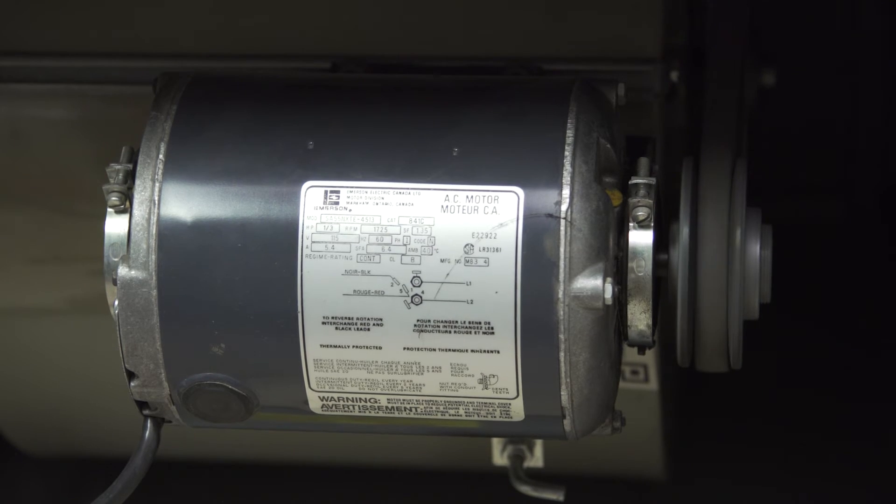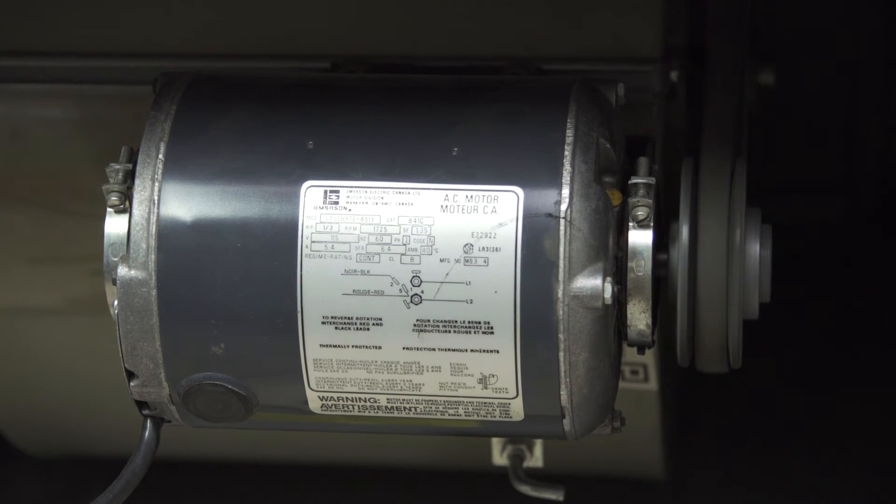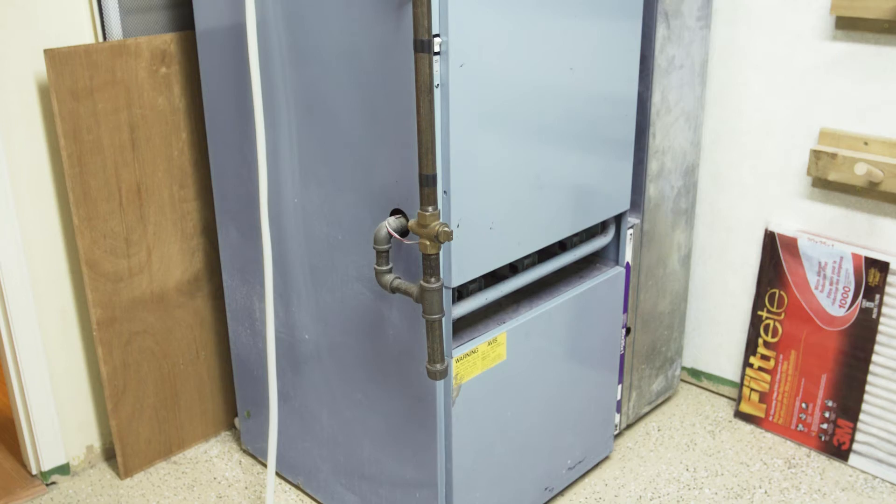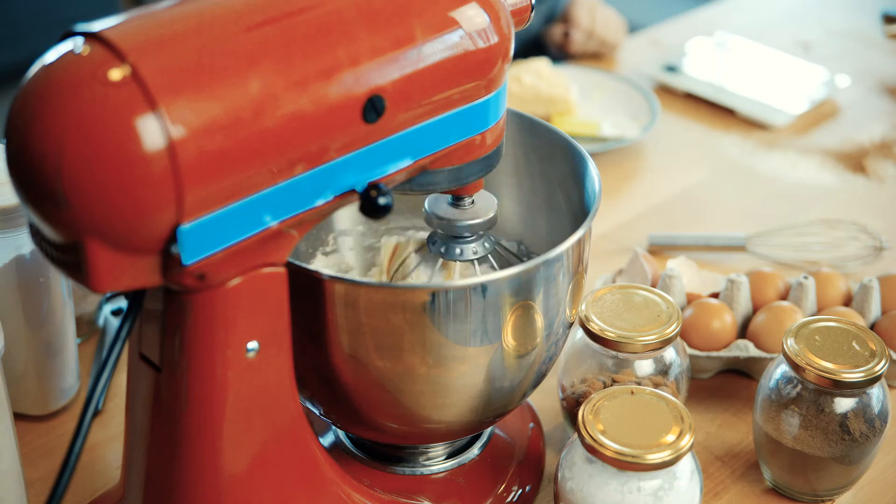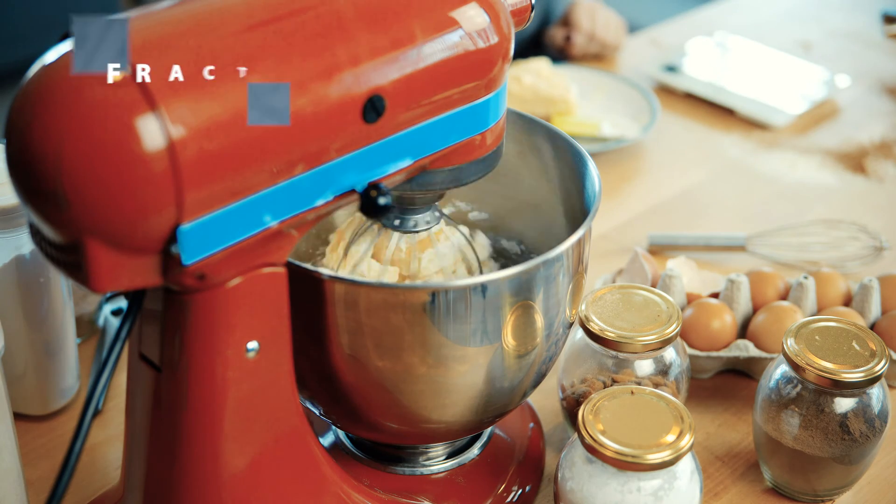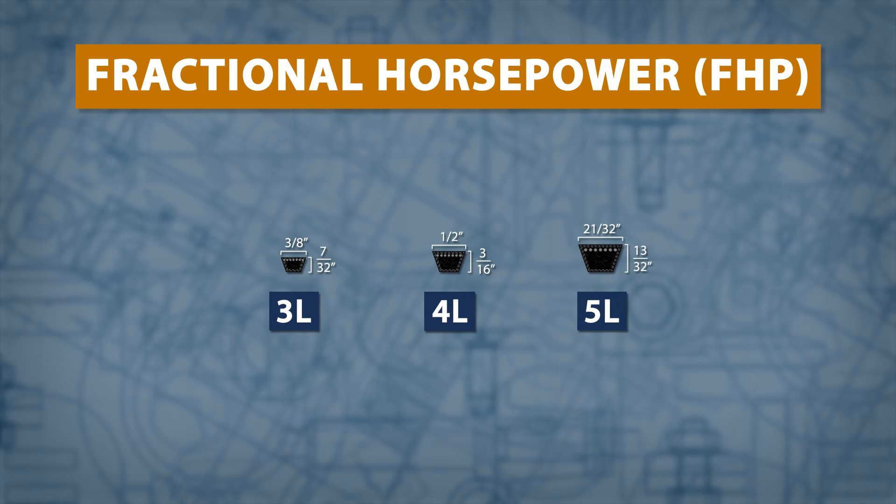Fractional horsepower or FHP belts are used in light-duty motors under 1 horsepower. These are found in appliances, furnaces, and other small machines. FHP belts are identified by the prefixes 3L, 4L, and 5L.